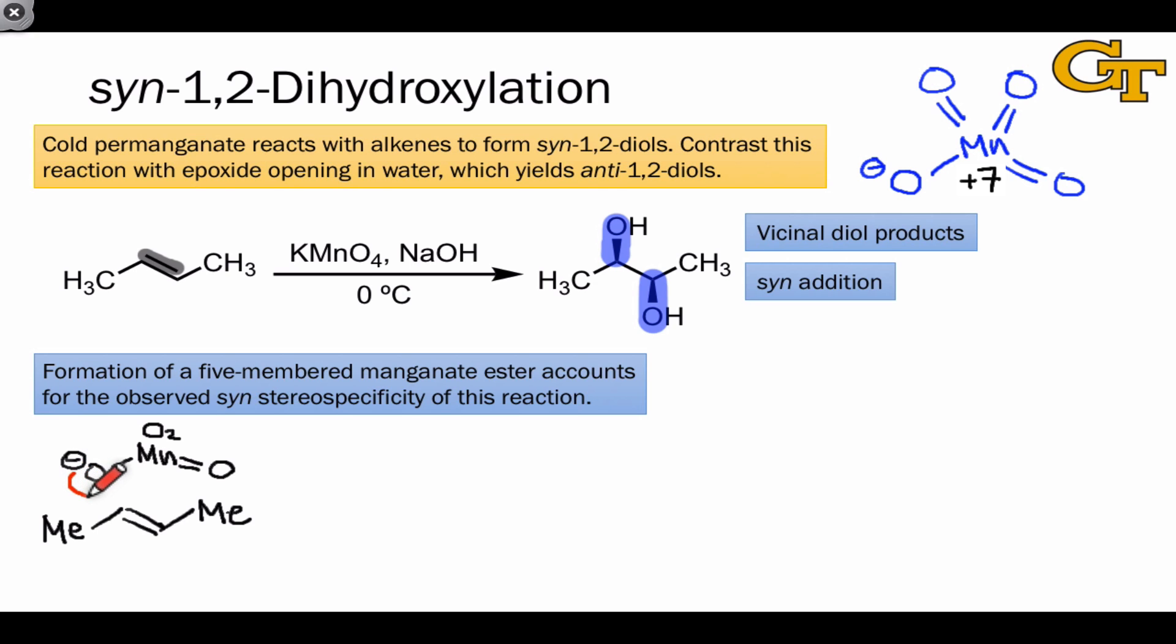The anionic oxygen of permanganate adds to the alkene, and the alkene donates an electron pair back to the electrophilic oxygen atom in the MnO double bond. This oxygen is electrophilic because the highly oxidized manganese atom wants to accept a pair of electrons.